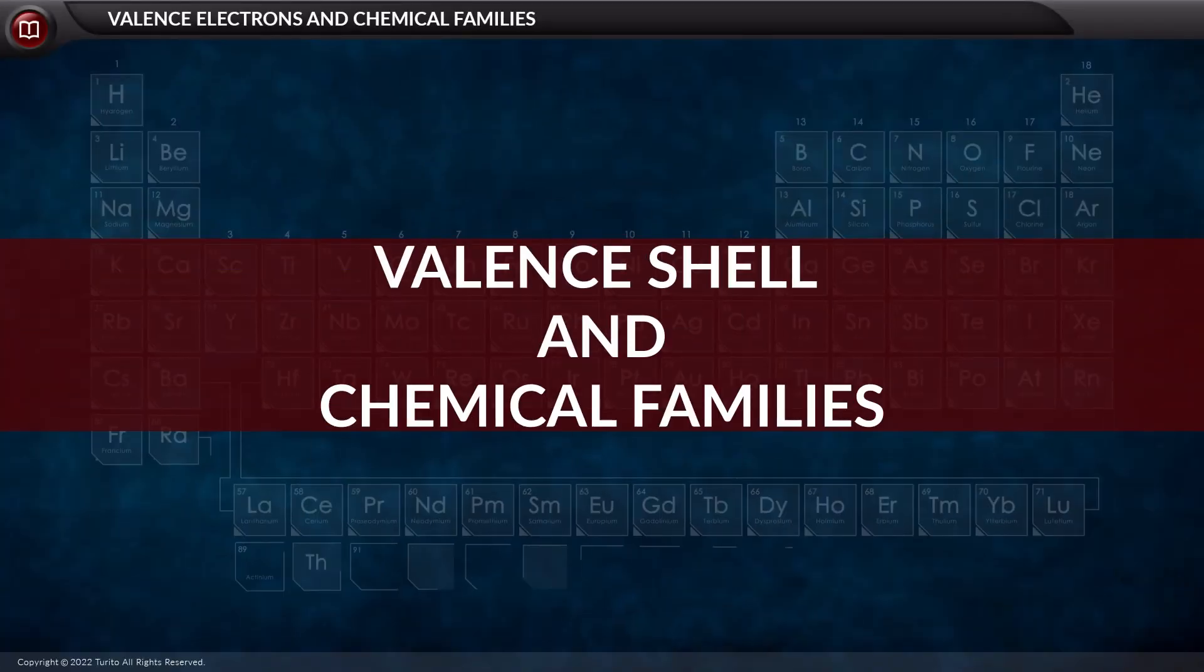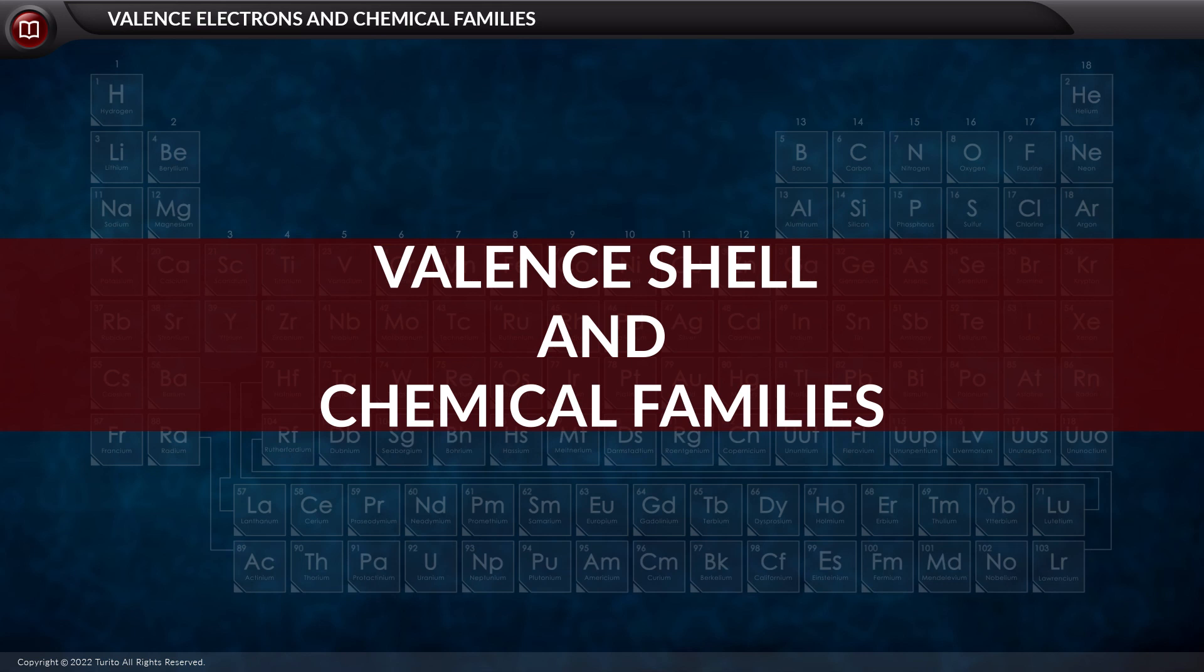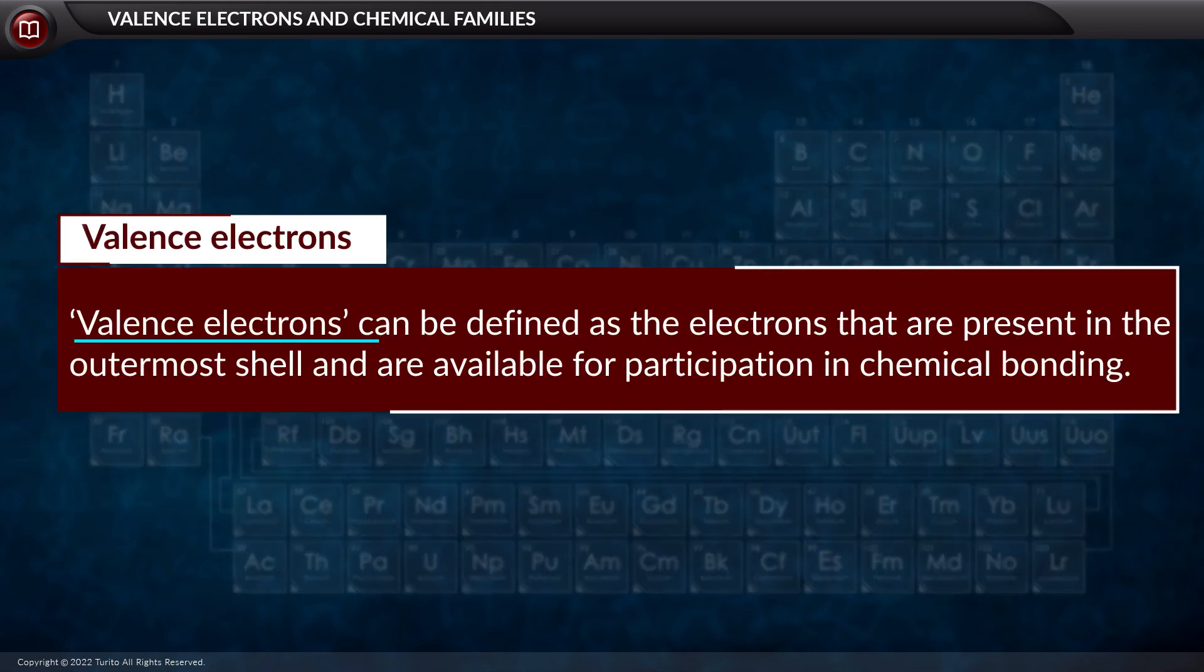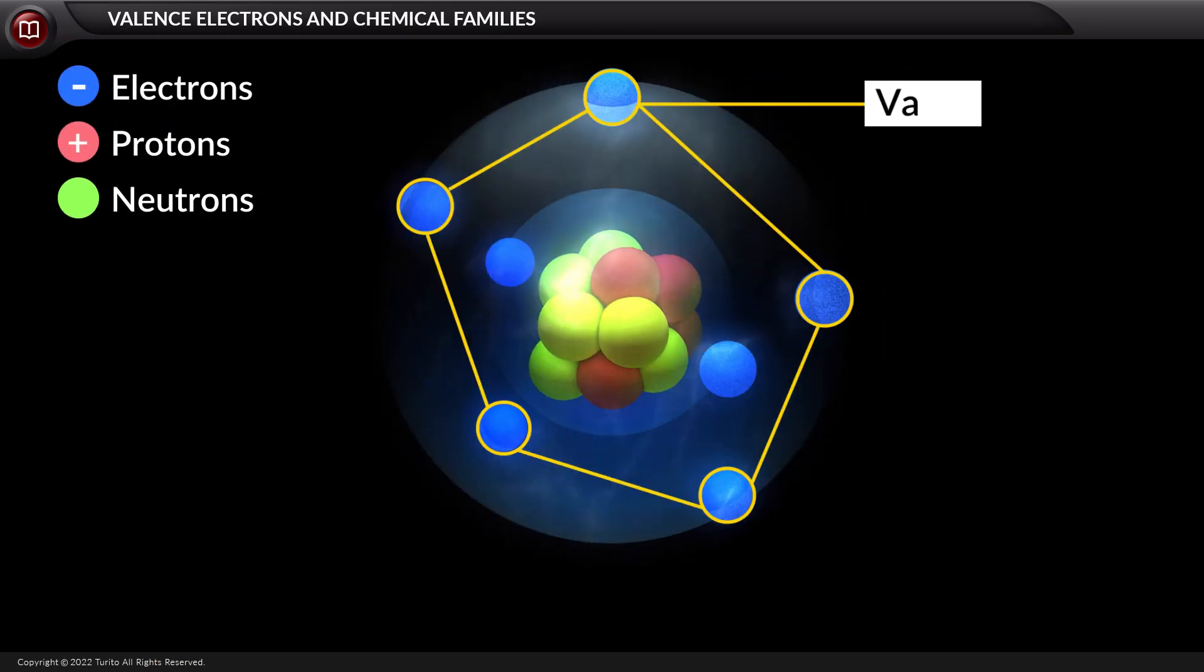Let us discuss valence shell and chemical families. What are valence electrons? Valence electrons can be defined as the electrons that are present in the outermost shell and are available for participation in chemical bonding. Thus, valence electrons determine the chemical properties of an atom.